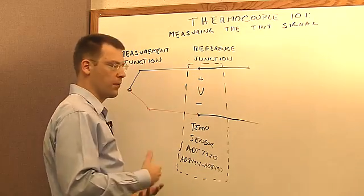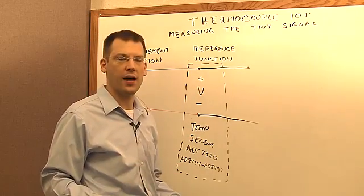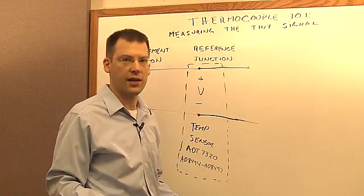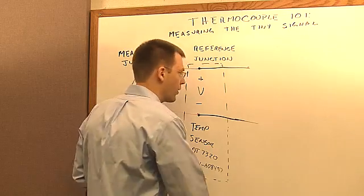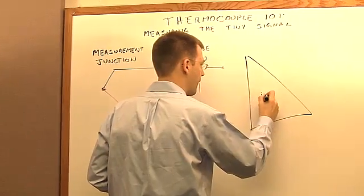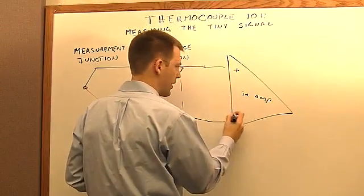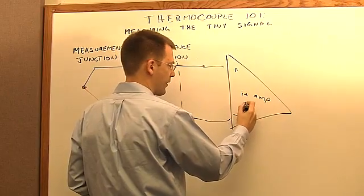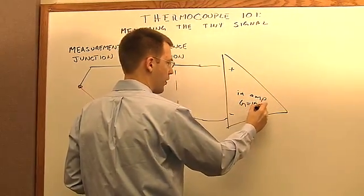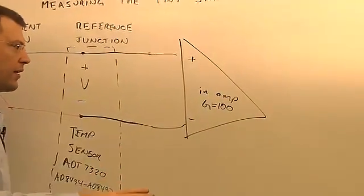You really need to apply a lot of gain to the signal to have a voltage that an ADC can easily digitize. So we're going to add an instrumentation amplifier here. We'll put this instrumentation amplifier at a fairly high gain, let's say a gain of 100, so that we can magnify this tiny signal into something for the ADC.